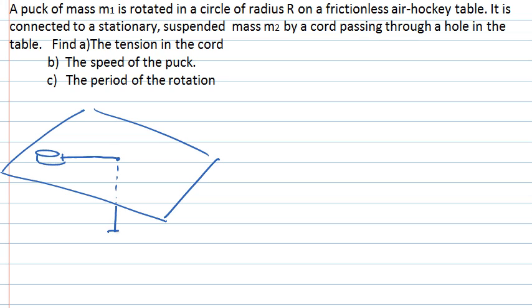to a second mass which is suspended below the table and has a mass of m2. Our puck has a mass of m1 and is rotating in a circle on the table, and the circle has a radius of R. The first thing we're asked to find is the tension in the string, so let's add that onto our diagram.